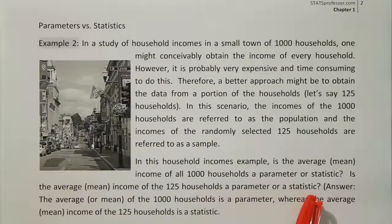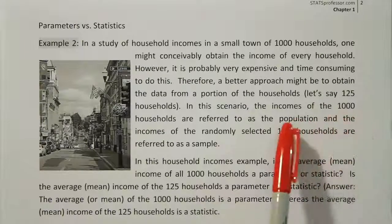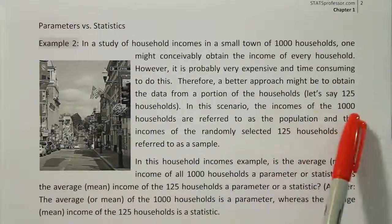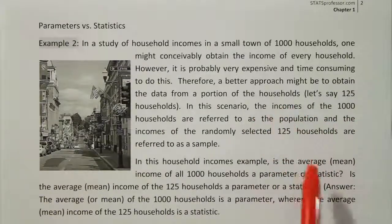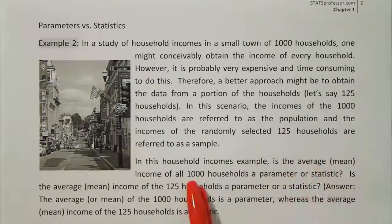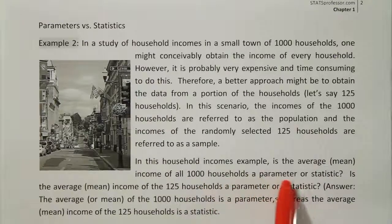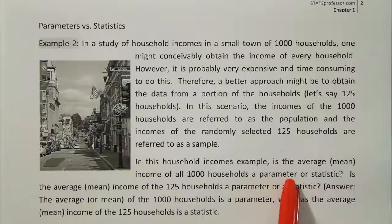Well, since the problem states that the 1,000 households in the town make up our population, then anything we calculate from all 1,000 households becomes a parameter. So when we calculate the average income for those 1,000 households, we've calculated a population parameter. Try to remember: P for population and P for parameter.